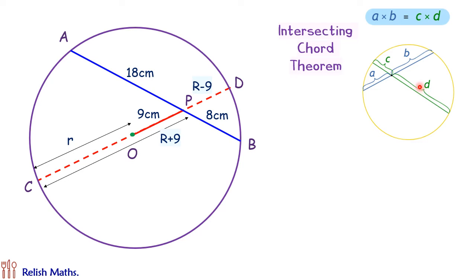This intersecting chord theorem is discussed in video number 16 which you can check, and using this theorem here, the two chords are your AB and CD. Using the theorem we'll get PA times PB, that will be equals to PC times PD.